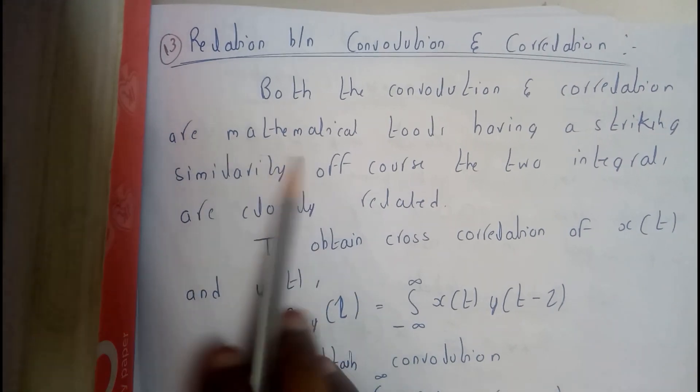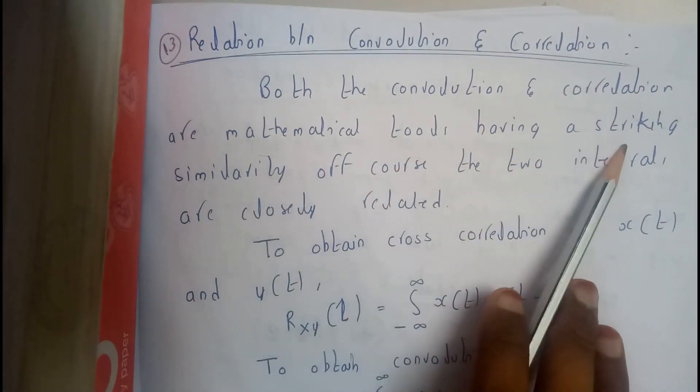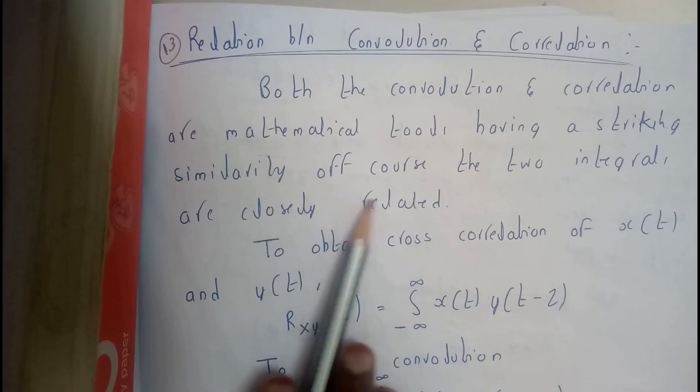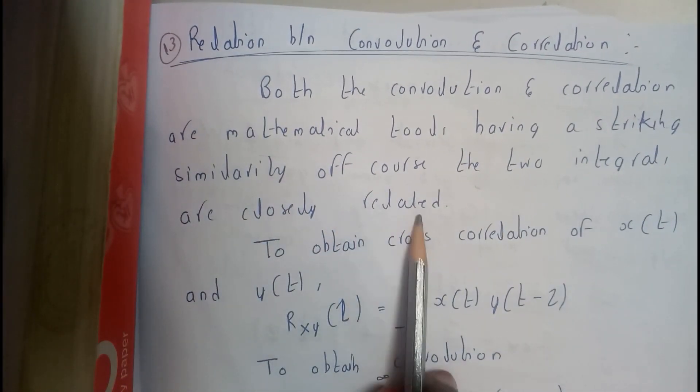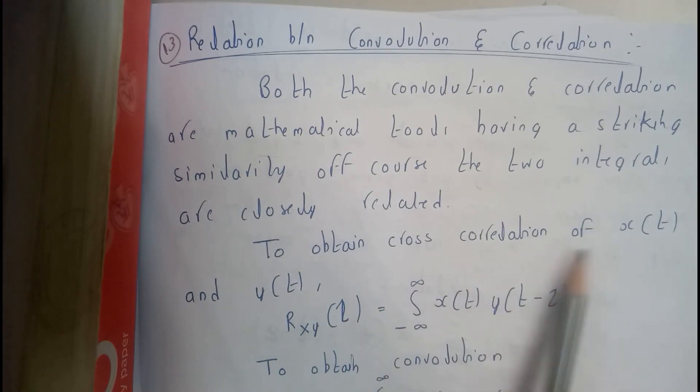Both convolution and correlation are mathematical tools having a striking similarity. Of course, the two integrals are closely related to obtaining the cross correlation.